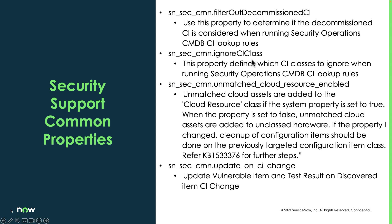The next one is the ignore CI class, used to define certain CI classes to be excluded from any kind of matching results. For example, if you have a DNS name entry in your CMDB and a server name in your CMDB and they both have the same name, the CI matching could potentially pick up that DNS name and return that as the result for your vulnerable item. So you want to include any CI classes where you don't want matching to be applied into this property.